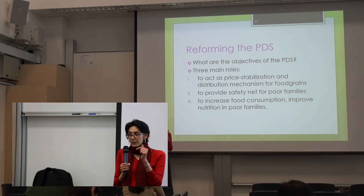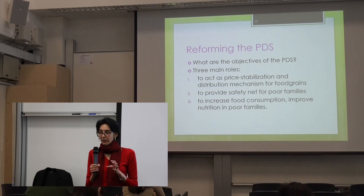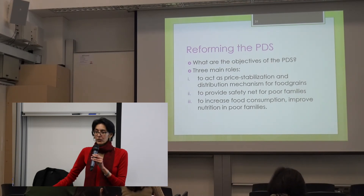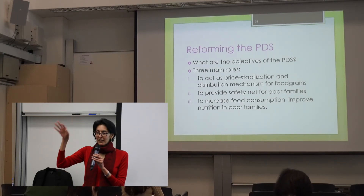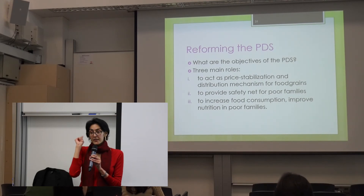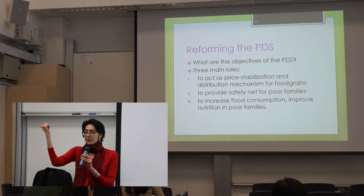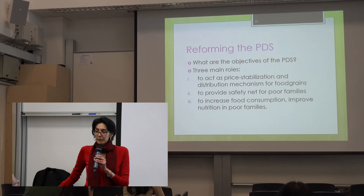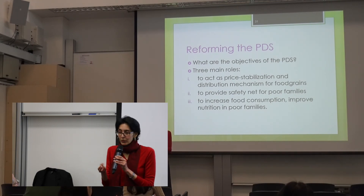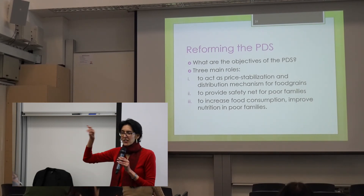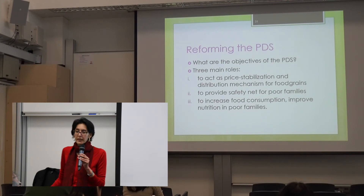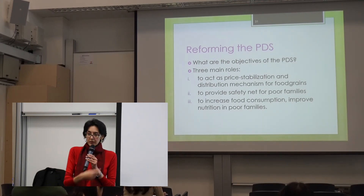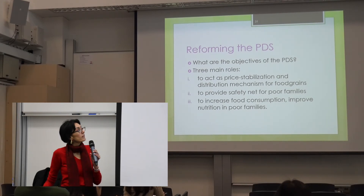The model state — Chhattisgarh — has actually started sending SMS text messages to the villages saying this truck left this point, this truck is carrying so much grain, so much grain should reach the village. They mark the PDS trucks in bright identifiable colors. Q: What are the best performing states — you said in the south? A: That would be Kerala and Tamil Nadu, but those states have traditionally performed well on a range of development indicators. This newer state, Chhattisgarh, has actually been very successful in trying to clamp down on corruption in the PDS.